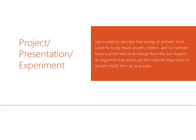After fully mastering this topic, you should be able to create a project, a presentation, an experiment, or maybe a model. Use models to describe that energy in animals' food — used for body repair, growth, motion, and to maintain body warmth — was once energy from the sun. Support an argument that plants get the materials they need for growth chiefly from air and water.